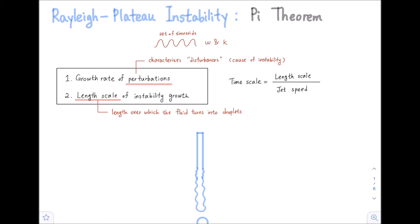In terms of a falling jet, our Rayleigh-Plateau instability has two important factors. Number one is the growth rate of the perturbations, and number two is our length scale of instability growth. By perturbations, we mean the things that characterize our disturbances, or the main cause of the instability. Because we have these tiny sources of disturbance that perturb the system, the jet will eventually break up and become unstable.